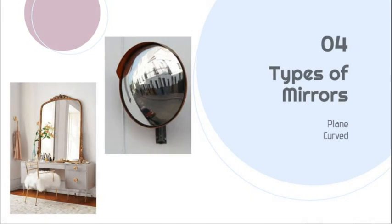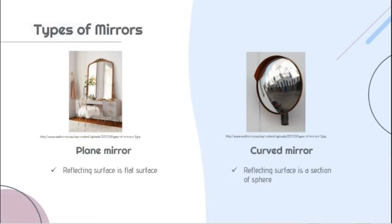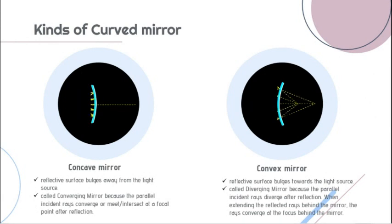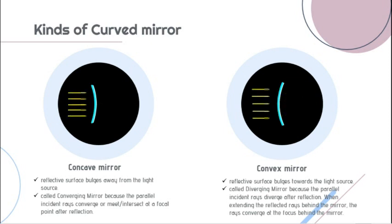Now let's discuss the types of mirrors. We have two types: the plane mirror, whose reflecting surface is flat and is the common type we use every day, and the curved mirror, whose reflecting surface is a section of a sphere. The curved mirror has two kinds: concave mirror and convex mirror.